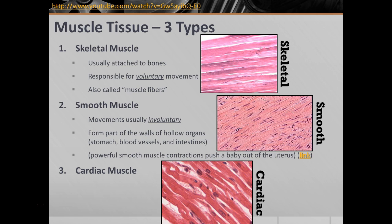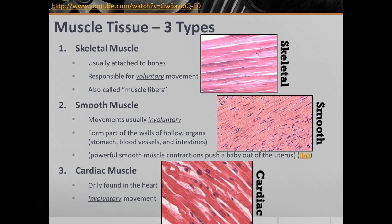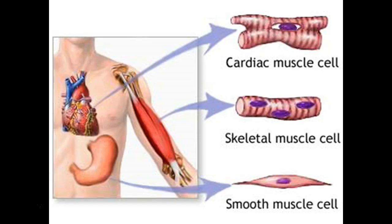And finally, cardiac muscle. As the name implies, this is heart muscle. The only place in the entire body you're going to find this is inside the heart. And this is, of course, involuntary movement. You can do things to speed up or slow down your heart rate by changing your breathing or activity level, but you do not have direct control over how your heart actually beats. So: skeletal, smooth, and cardiac.